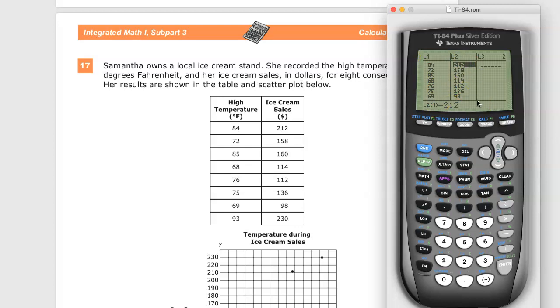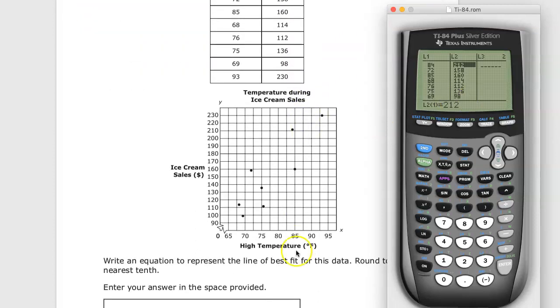Now we're going to do a linear regression, because we're trying to find a line of best fit. So I'm going to go in and hit stat again, go over to calc, click down into where I get linear regression, and hit the x list.